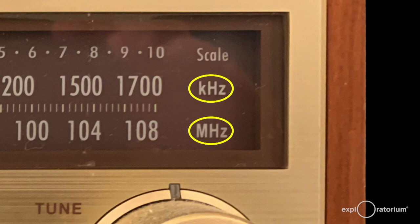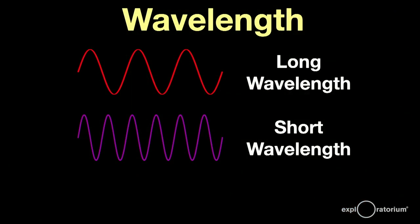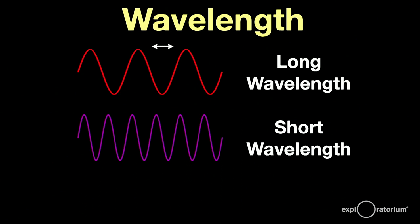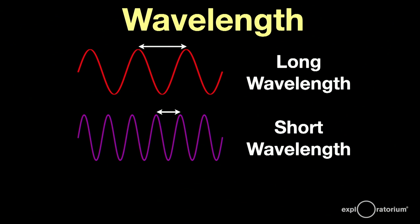We're talking about the frequency of the radio wave carrying the musical information. If the wave vibrates slowly, the peaks and troughs are further apart. Vibrating quickly brings the peaks and troughs closer together. If you measure the distance from peak to peak, or trough to trough, you get a distance called the wavelength. The red wave has twice the wavelength of the violet wave.